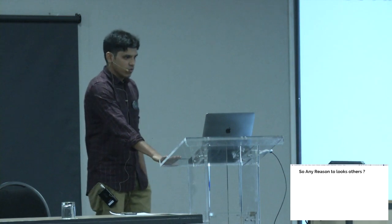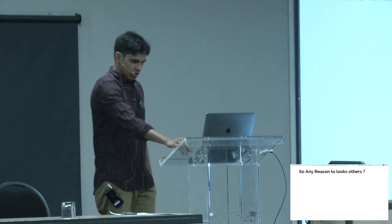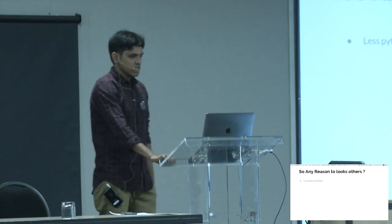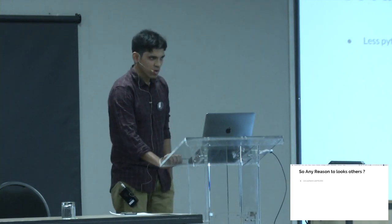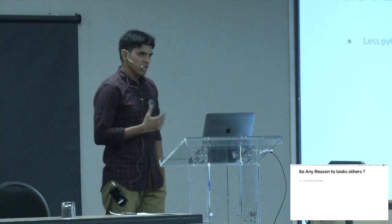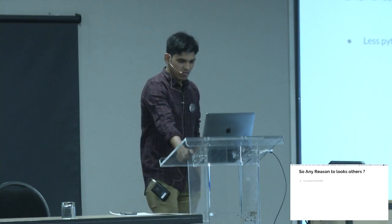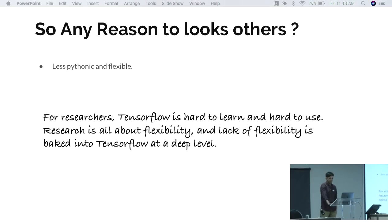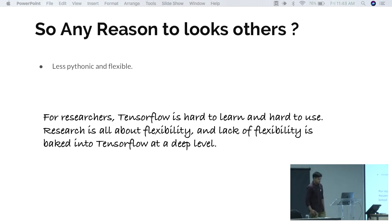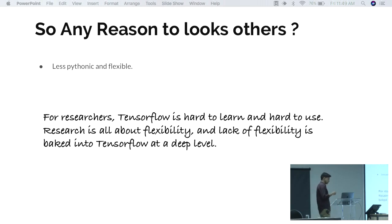However, TensorFlow is less Pythonic, which discourages Python programmers. For researchers, TensorFlow is hard to learn and hard to use — lack of flexibility is baked into TensorFlow at a deep level. It has less coding flexibility than PyTorch, Chainer, or MXNet. You have to define a session, manage placeholders and variables — these are not very Pythonic ways of doing things. TensorFlow was originally inspired by Theano and uses a static graph, requiring you to write first and then run, though from version 1.7 onwards it supports eager execution and dynamic graphs.